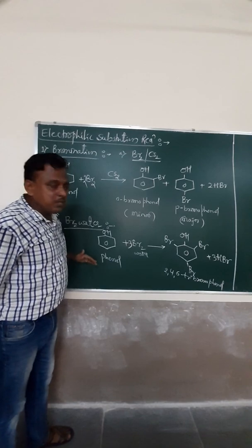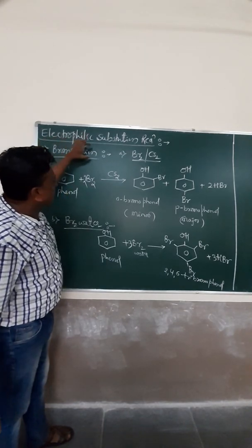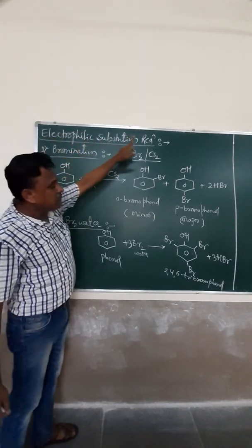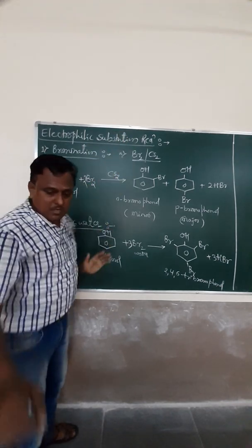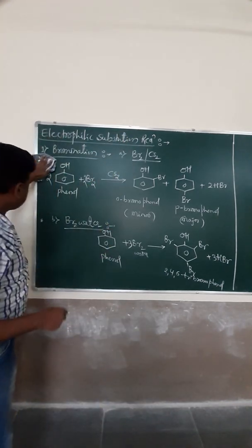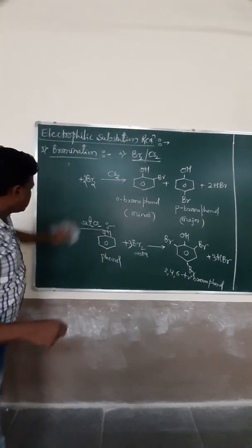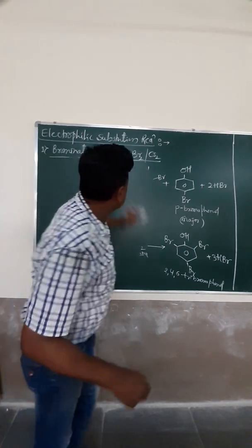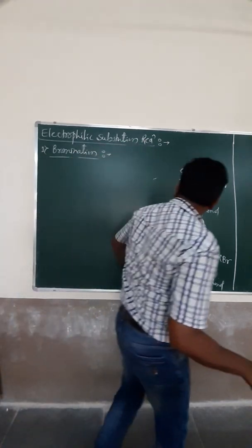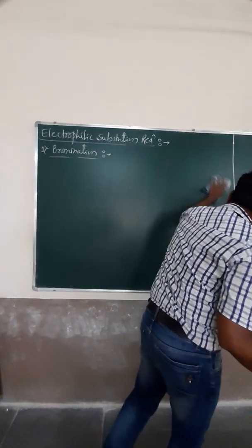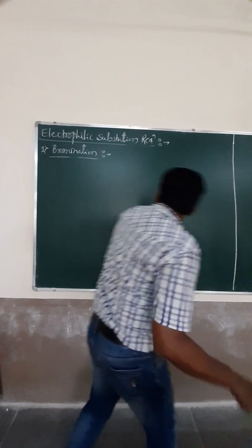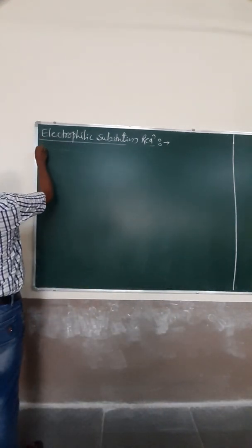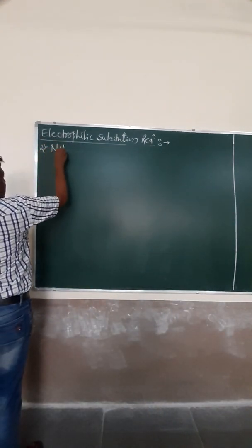To summarize: when phenol reacts with bromine in organic solvent it gives ortho-bromophenol and para-bromophenol, and when phenol reacts with bromine water it gives tribromophenol. These are the major reactions of halogenation or bromination in the phenol chapter. After bromination, we go on to the next reaction in your syllabus, which is nitration.